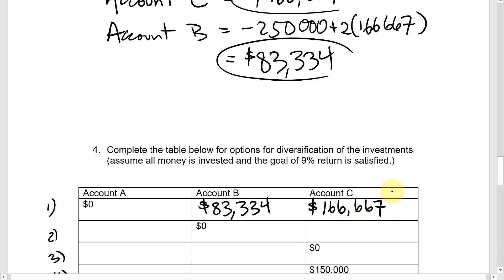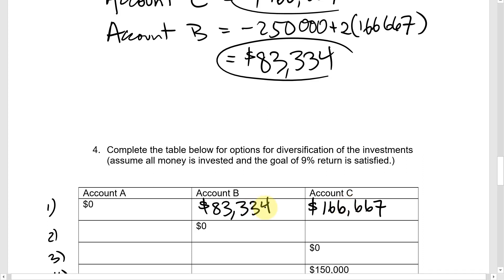We can double-check: does this add up to $250,000? Indeed, $83,334 + $166,667 = $250,001 — just $1 off due to rounding. We can also verify the interest: 0.07 × $83,333 + 0.10 × $166,667 = $22,500.01, which meets the $22,500 goal. So if we decide not to invest in account A, we'd split the money this way between B and C.